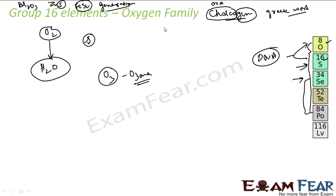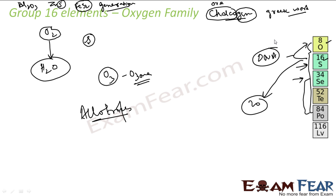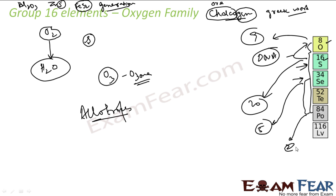One more important property of the oxygen family is allotropes — most of these elements exhibit allotropes. Sulfur has almost 20 allotropes, making it the king. Oxygen has almost 9 allotropes, selenium has almost 5 allotropes, and polonium also has almost 2 allotropes.